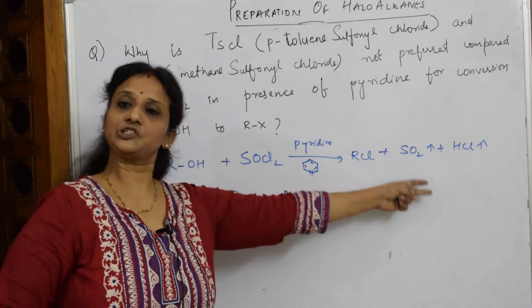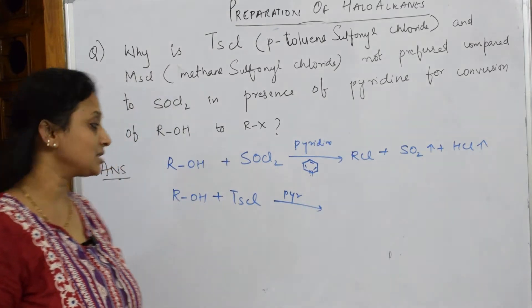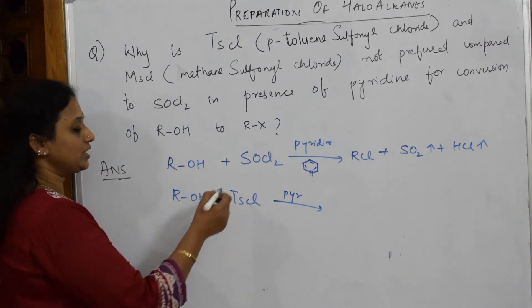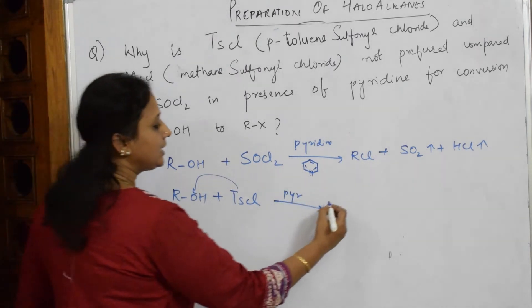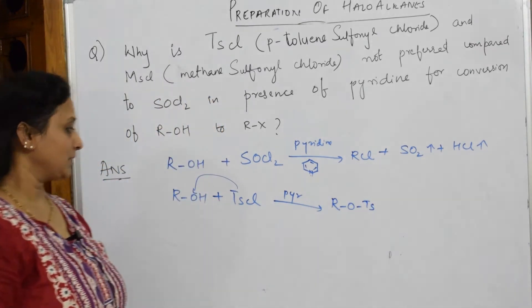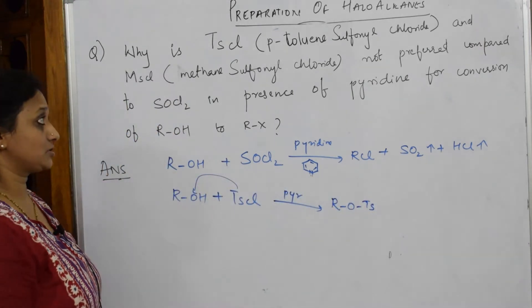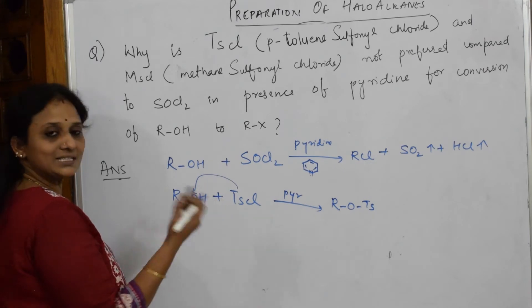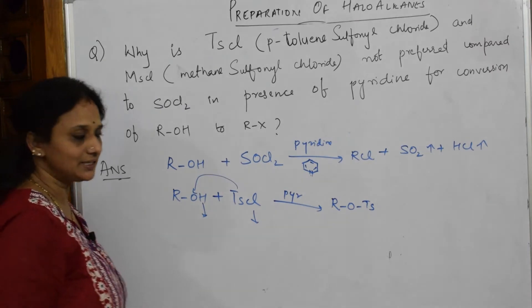Instead of forming the gaseous products and instead of forming RCl which I want, this TSCl immediately is going to block this alkyl group. How does it look like? It becomes ROTS. Yes, instead of forming gaseous products, this toluene sulfonyl chloride is going to block this part. Now what is left? Left out is H and Cl, isn't it?